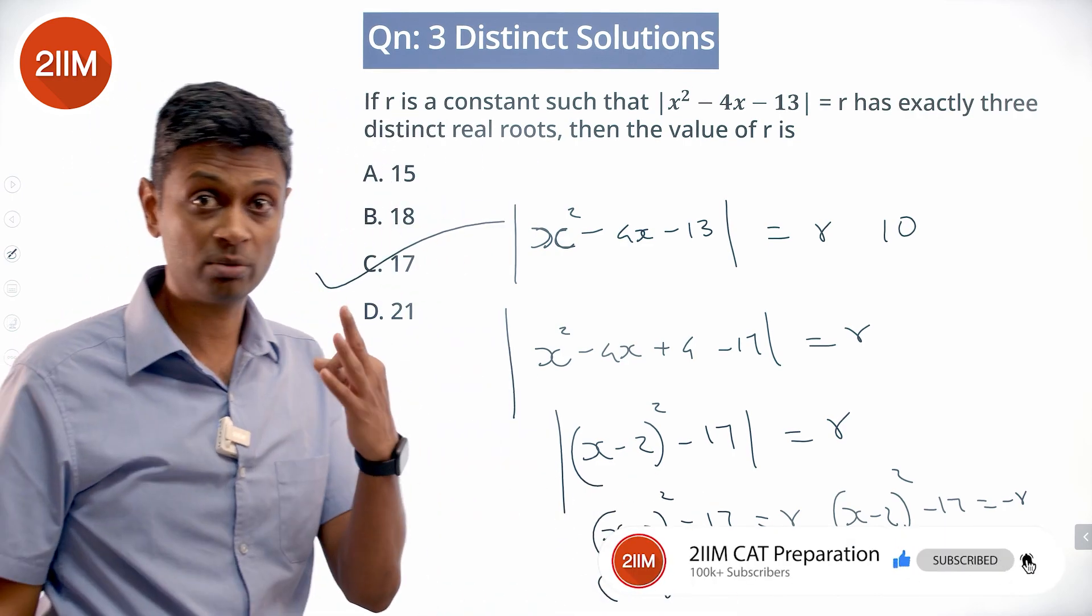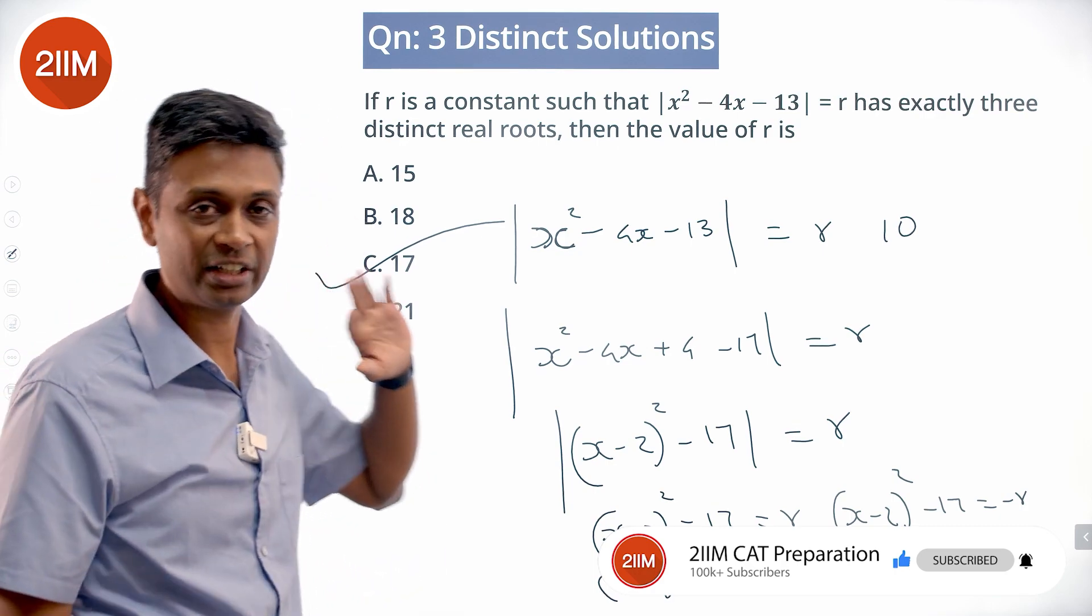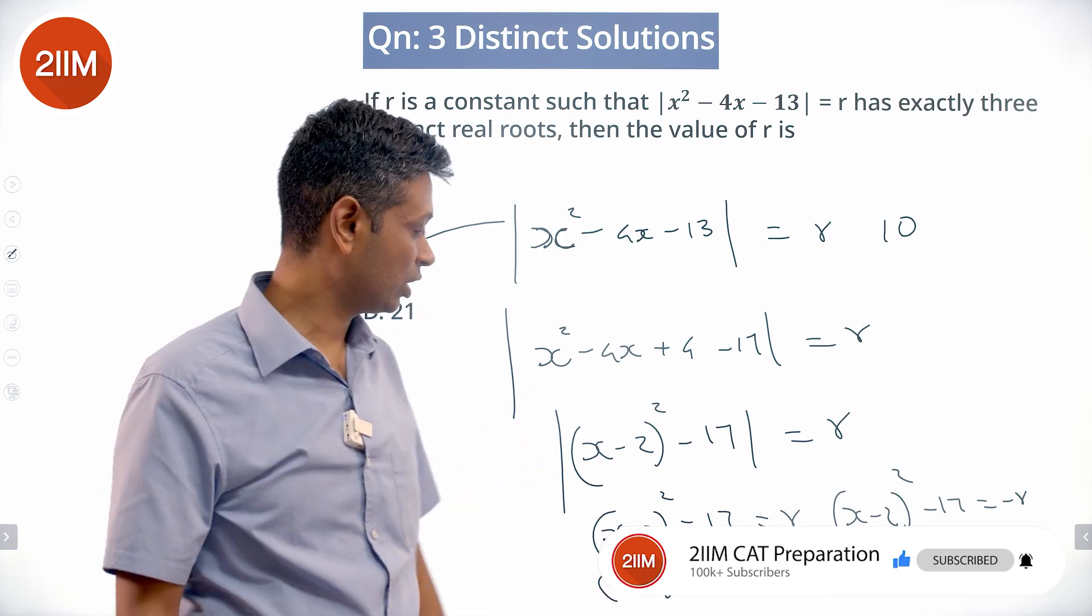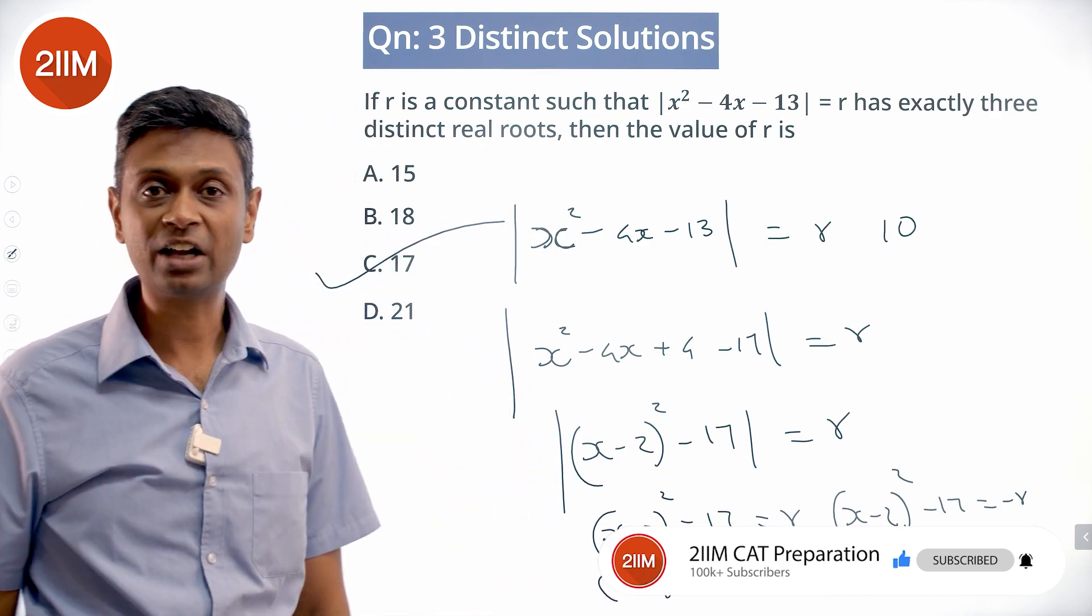So there are three roots possible only when r = 17. This is -r + 17. Three roots are possible when r = 17.